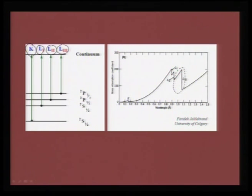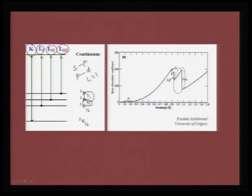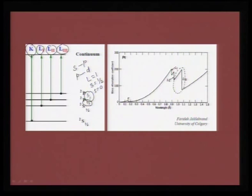L2 and L3 are categorized based on LS coupling. If your transition is from P to D or S to P then your L equals 1, and this 1 can couple with either S = 1/2 or S = 0, and depending on that you get either j = 1/2 or j = 3/2 which is nothing but your LS coupling. Based on this, L2 corresponds to j = 1/2 and L3 corresponds to j = 3/2. So L2 and L3 edges are nothing but two states from the same transition resulting from the spin-orbit coupling.